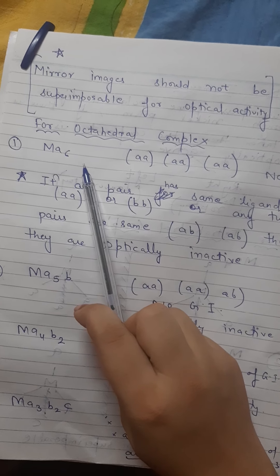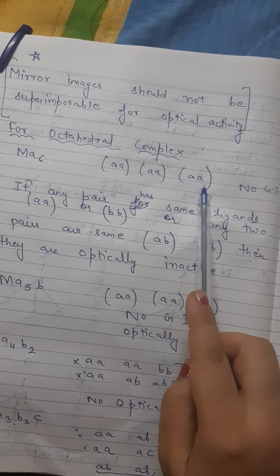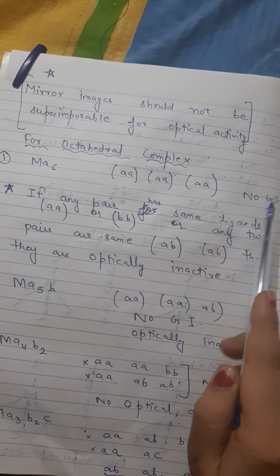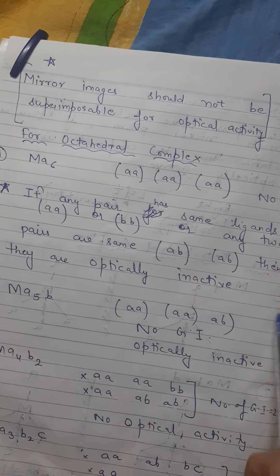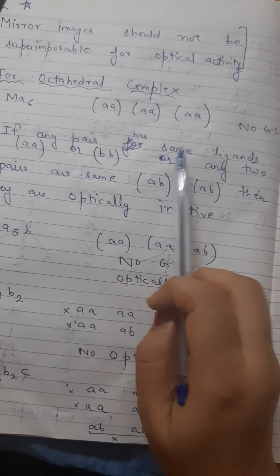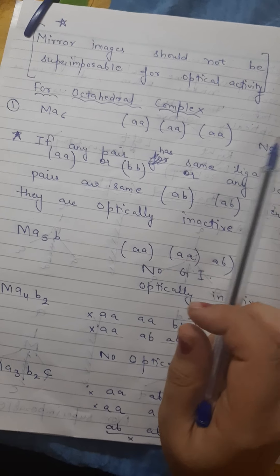First of all, MA6 - we have made three types, three combinations. No geometrical isomers. How did I say this? Now the trick - start point: if any pair has same ligands, if any combination has AA or BB, or if two pairs are same like AB and AB are same.